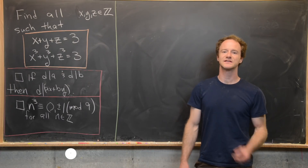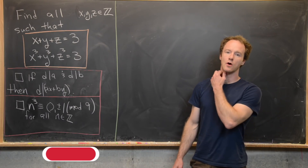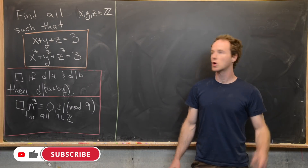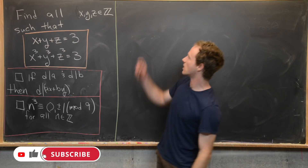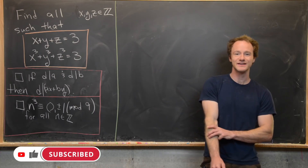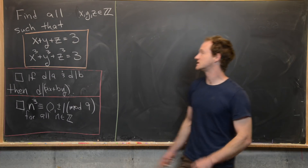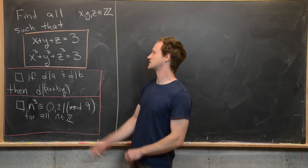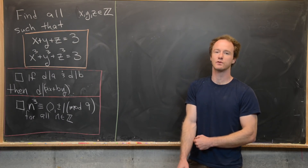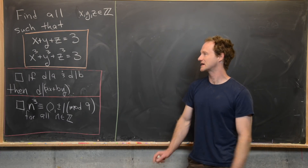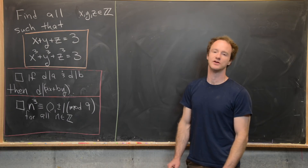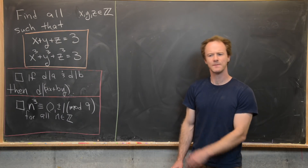Here we're going to solve a nice system of equations over the integers. Our goal is to find all x, y, and z which are integers such that x plus y plus z equals 3 and x cubed plus y cubed plus z cubed equals 3.